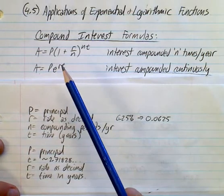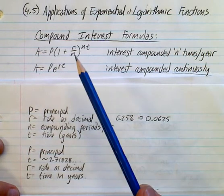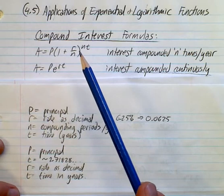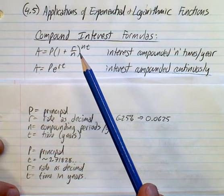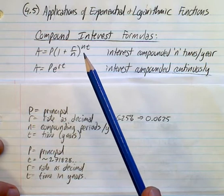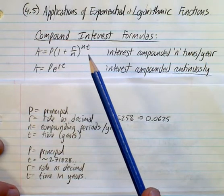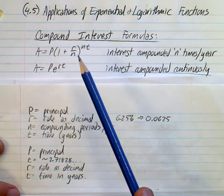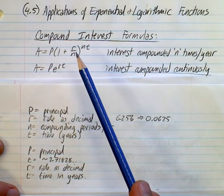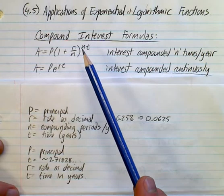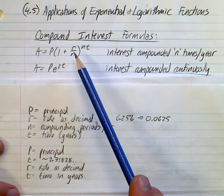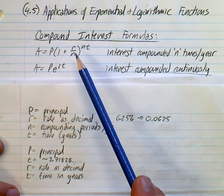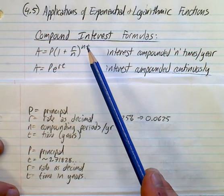P is your principal in both cases. R is your rate in both cases expressed as a decimal. So if you have 6.25%, you need to change it to 0.0625 in order to use it in either of these calculations. The T is the time in years in both situations. The N is an addition up here. It is the number of compounding periods per year. If you compound it monthly, daily, weekly, semi-annually, quarterly, biannually, bi-monthly, semi-weekly, bi-weekly, all these different things have a different number of compounding periods per year.